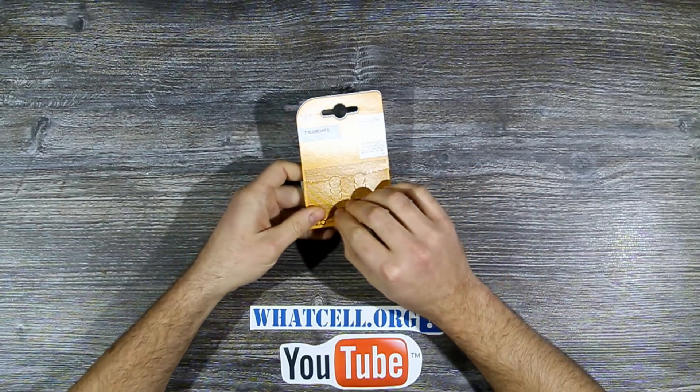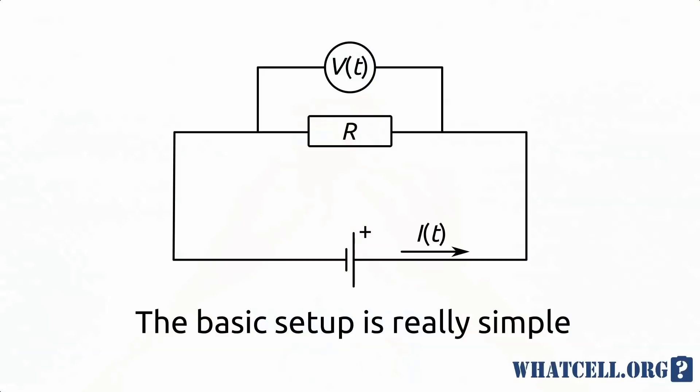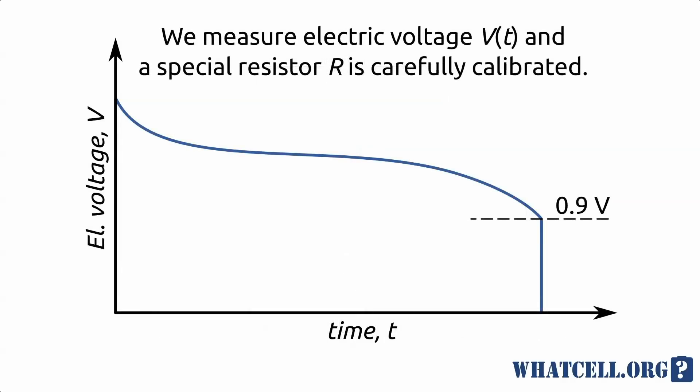This is how we measure performance. The basic setup is really simple. We have a battery, a resistor and some voltage measuring device. We discharge the battery through a carefully calibrated resistor. In the process we measure voltage and time and that's it. From there on everything is calculated.